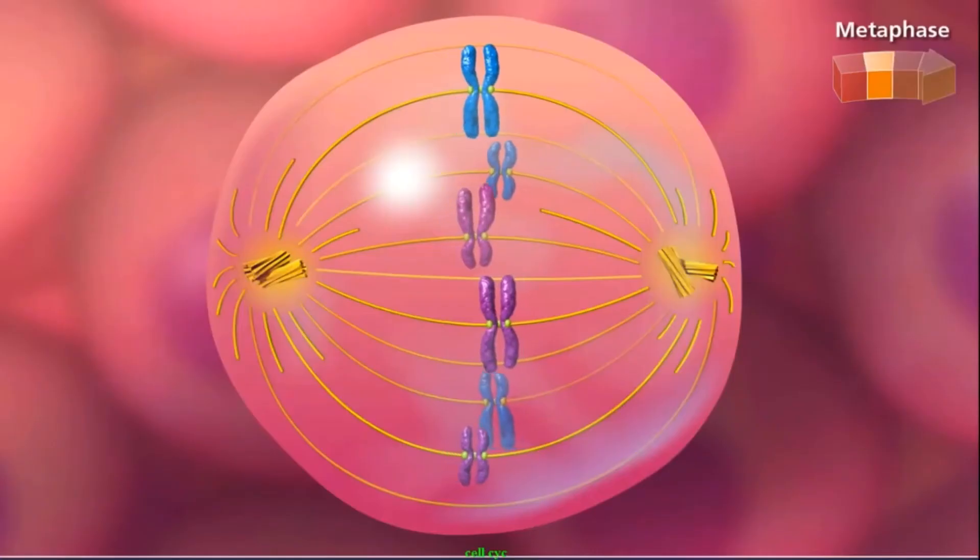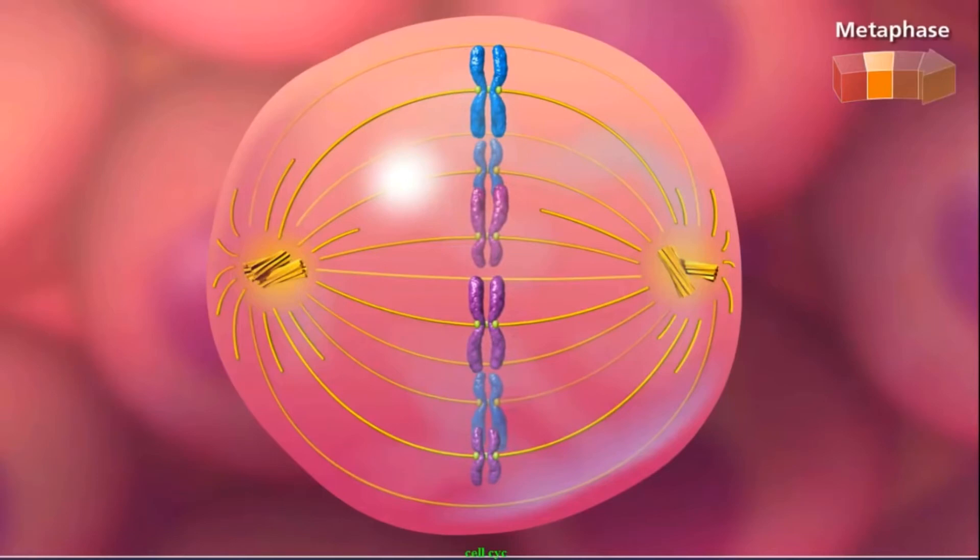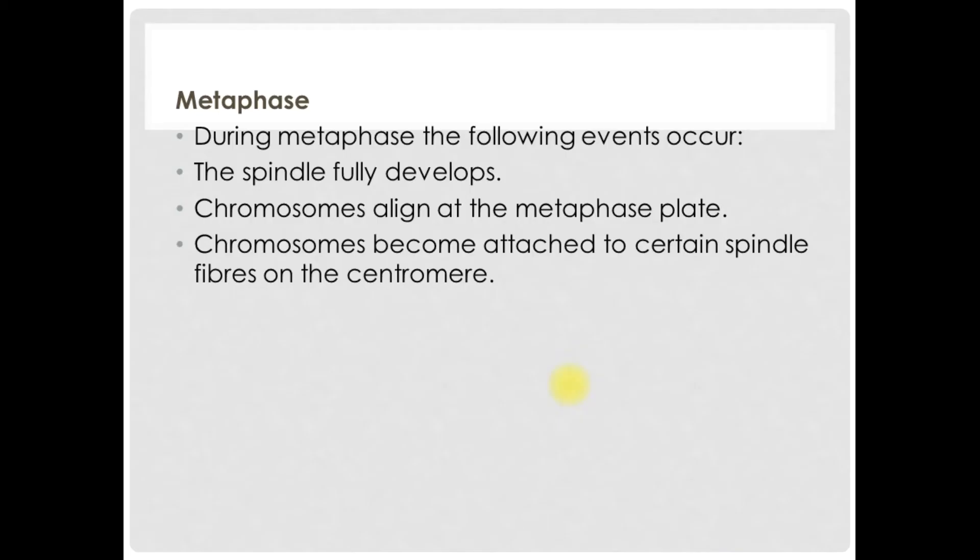Now let's take a look at metaphase. During metaphase the following events occur: The spindle fully develops, chromosomes align at the metaphase plate, and chromosomes become attached to certain spindle fibers on the centromere.